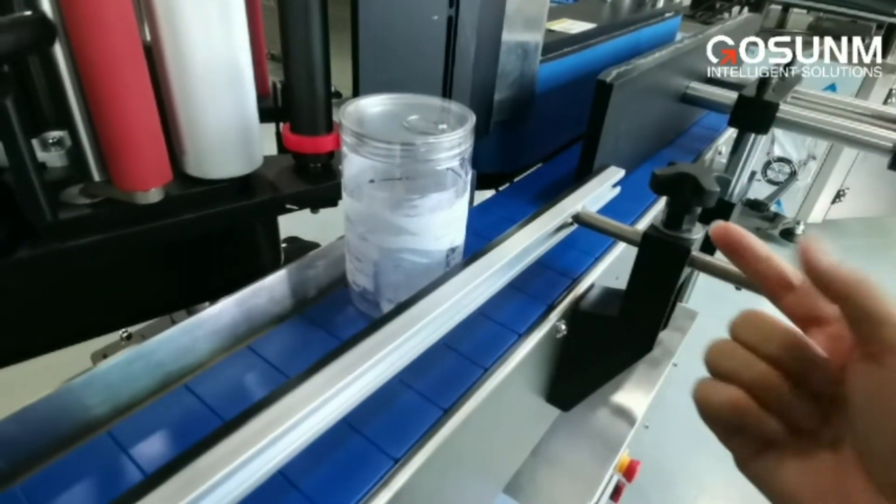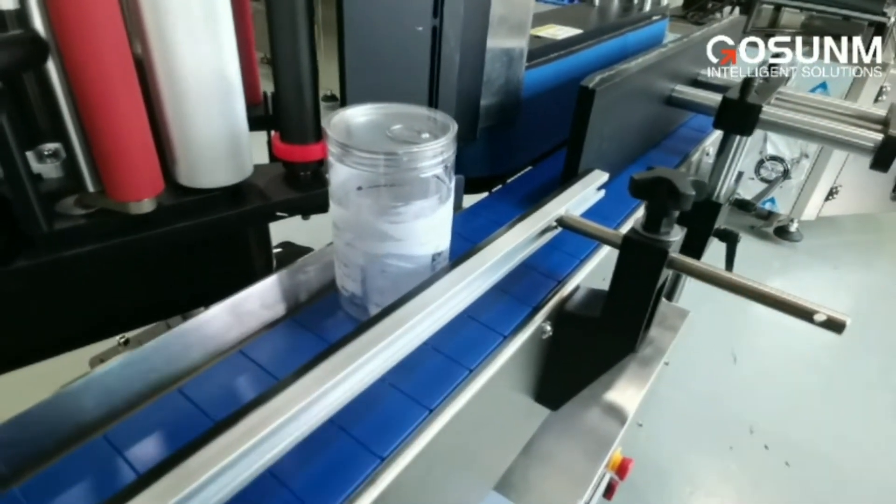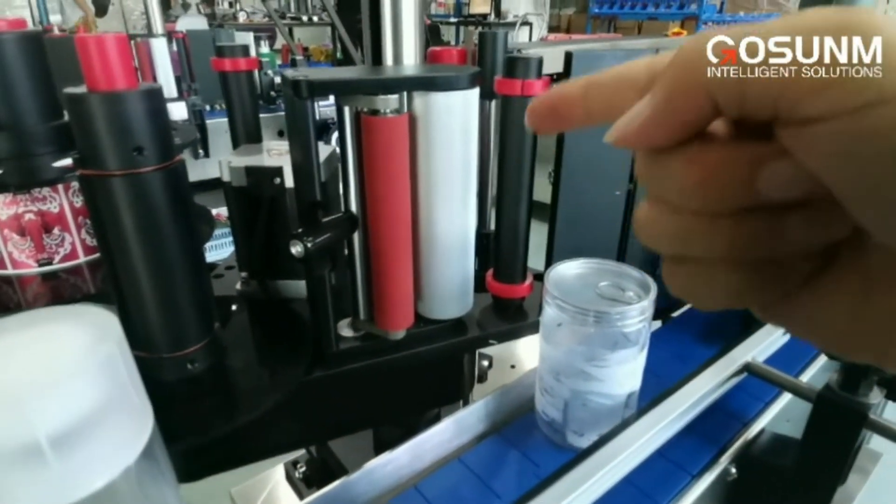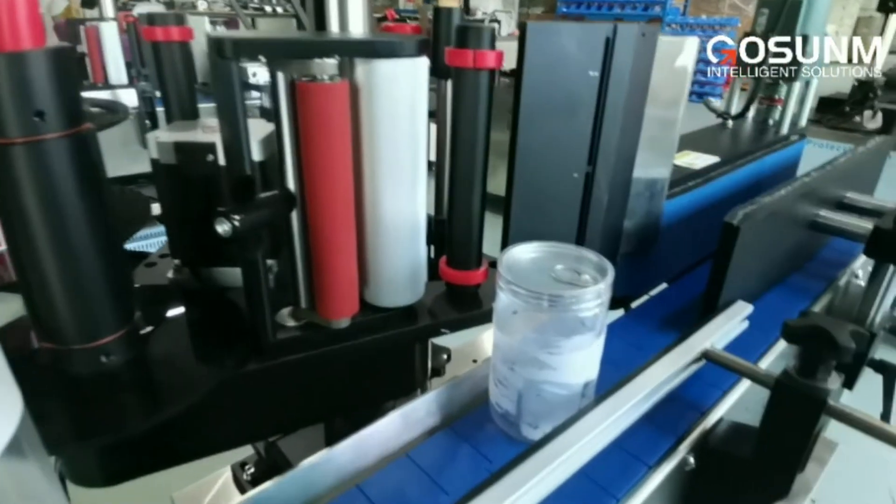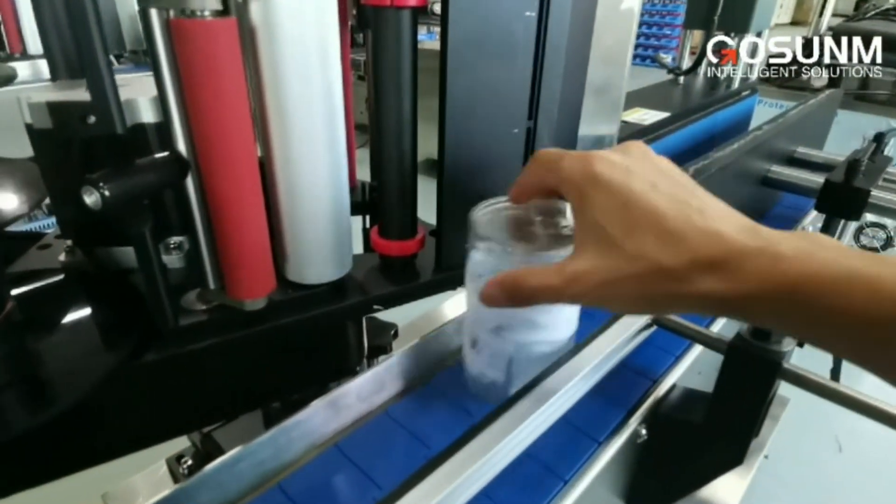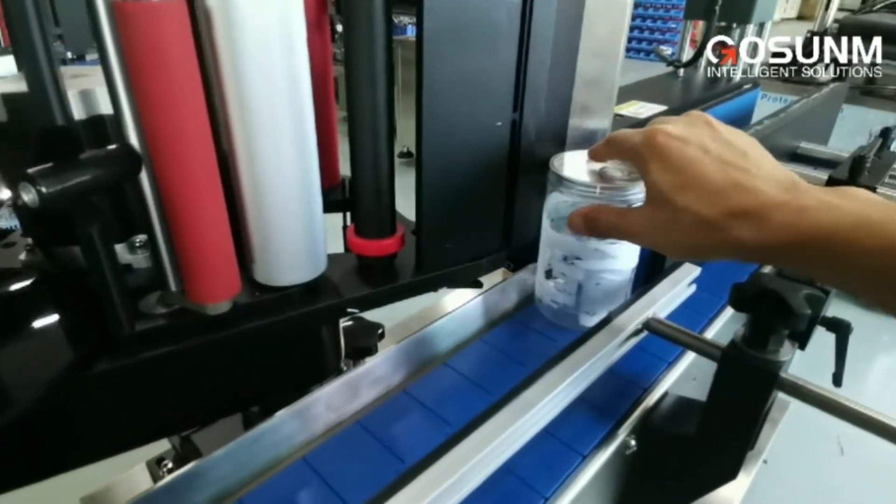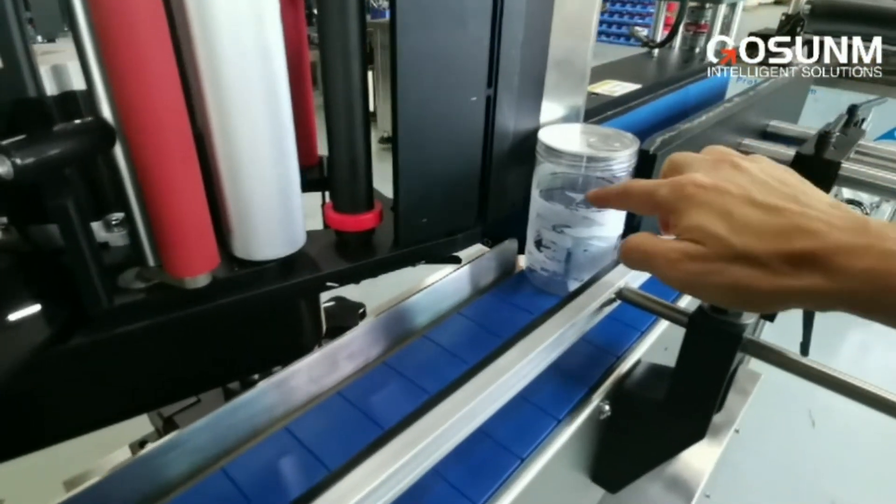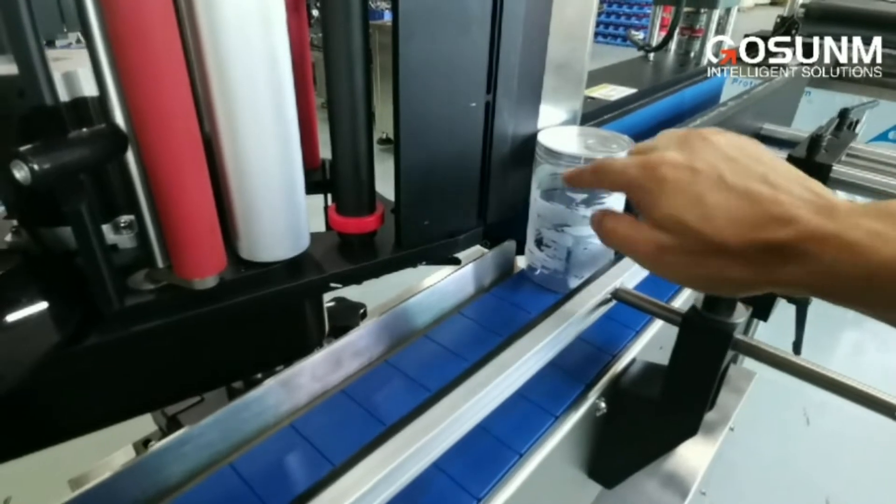The sensor will send the signal to this labeling head, this is the model. And then the bottle will go inside and the labels will be applied around the bottles.